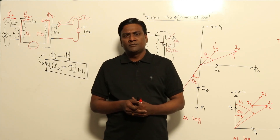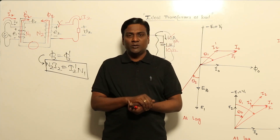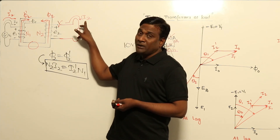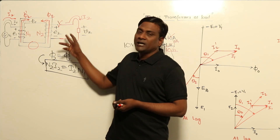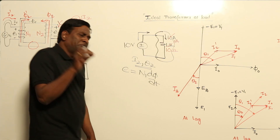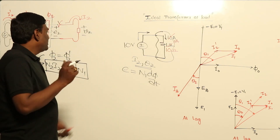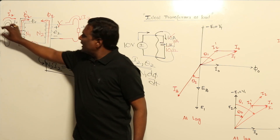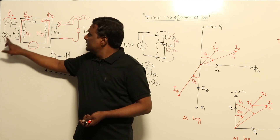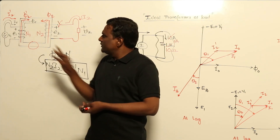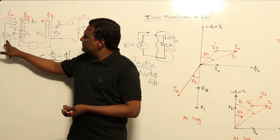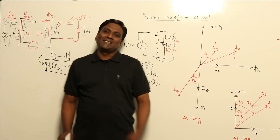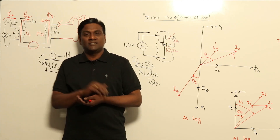As discussed, there are two independent variables: magnitude of I2 decided by the load, and load power factor also decided by the load. The current magnitude and the angle between E2 and I2 can be any value. Now there is a common area of confusion among students — regarding V1 and E1. These are directly connected, so by applying KVL: V1 = E1.